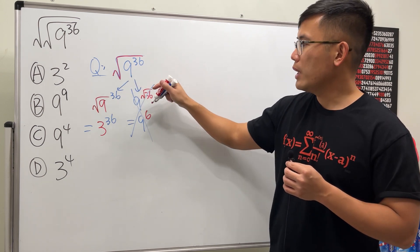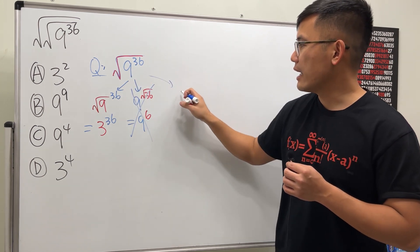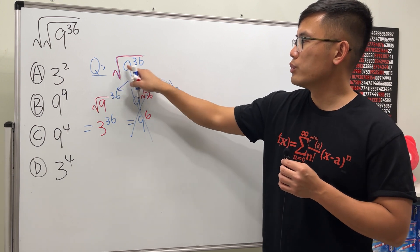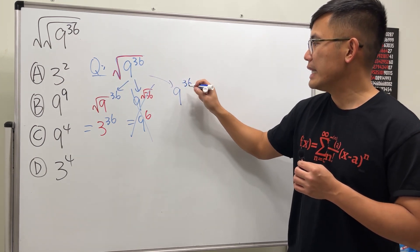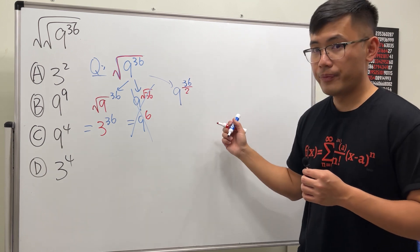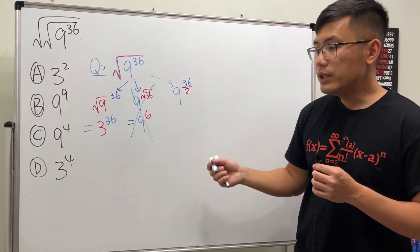This is how it works: when we have a square root and we have 9 to the 36th power, instead of doing the square root of the 36, we actually have 36 divided by 2, right? Divided by 2. And the reason is...